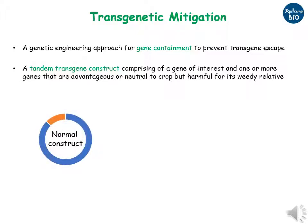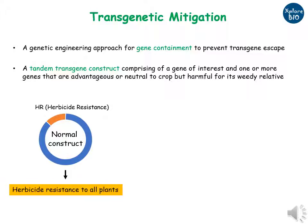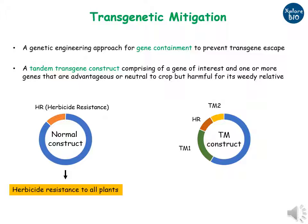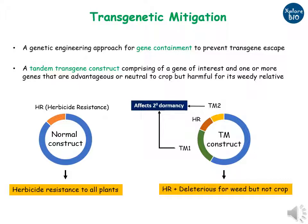In this figure, the first construct has a single transgene imparting herbicide resistance to the plant. The second construct, known as the TM construct, has the herbicide-resistant gene plus two other tandemly arranged genes which target secondary dormancy. Secondary dormancy is a unique characteristic of weeds. Thus, these gene products will only affect the development of weeds but have no effect on the crops.